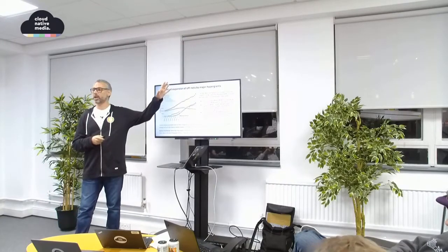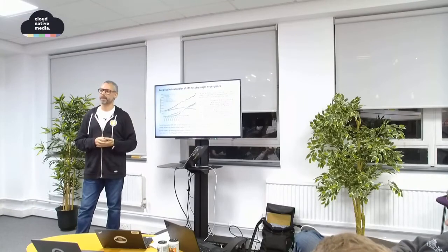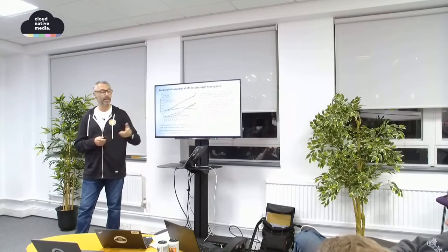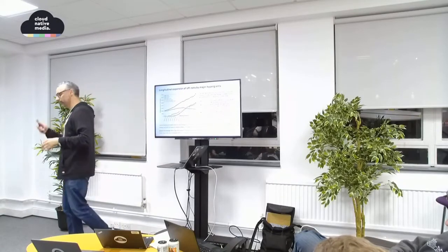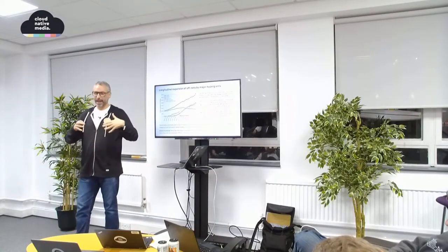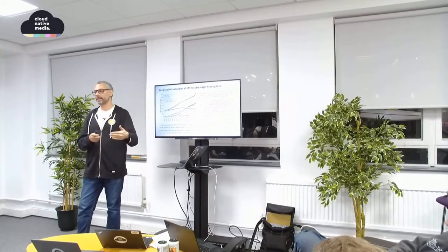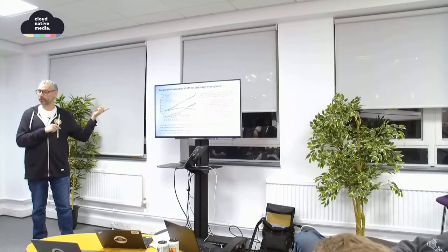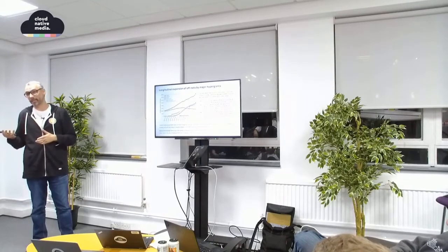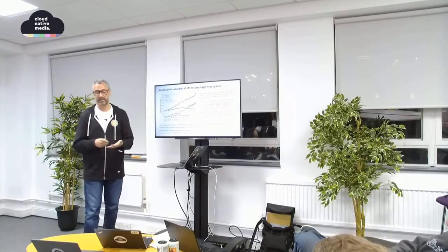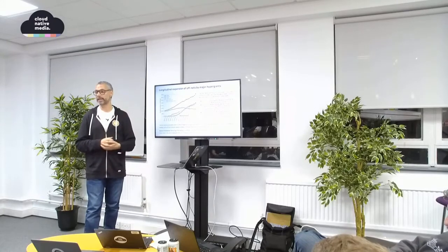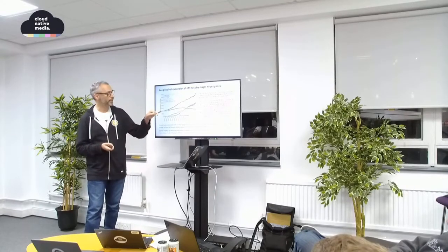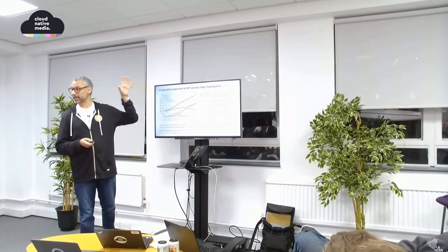In March, Google Cloud made a product available called Media CDN, which is the product form of the Google Global Cache. As YouTube traffic expanded, Google started placing off-nets in all the ISP networks delivering popular YouTube content. Chrome downloads for a billion users, and Google Play APKs for Android — all coming from the off-nets. That infrastructure has been delivering those core Google services for a long time.